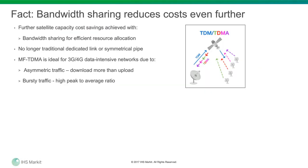In addition to the abundance of capacity causing pricing to go down, there is another important issue that can significantly contribute to cost reduction: bandwidth sharing access schemes, for example MFTDMA — Multi-Frequency Time Division Multiple Access. Bandwidth sharing is a good fit for data-intensive networks due to the nature of 3G and LTE traffic. The traffic is asymmetrical — we all download much more than we upload — and also traffic is bursty, with a high peak-to-average ratio.